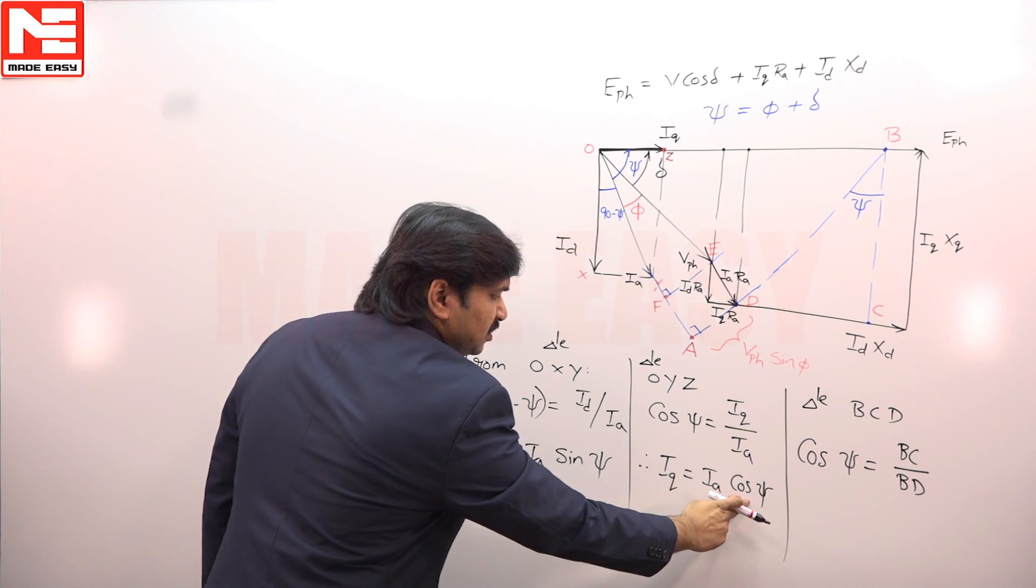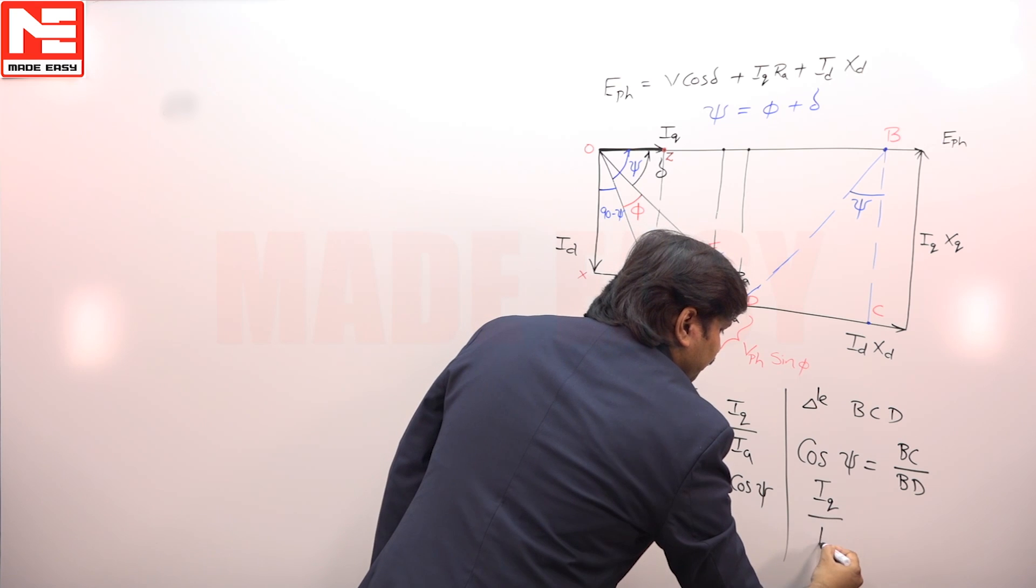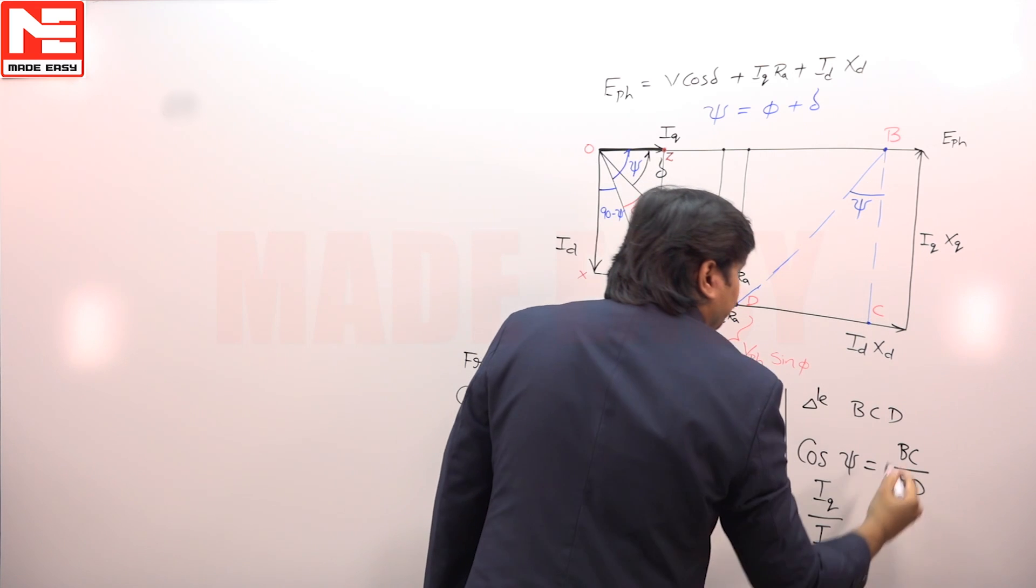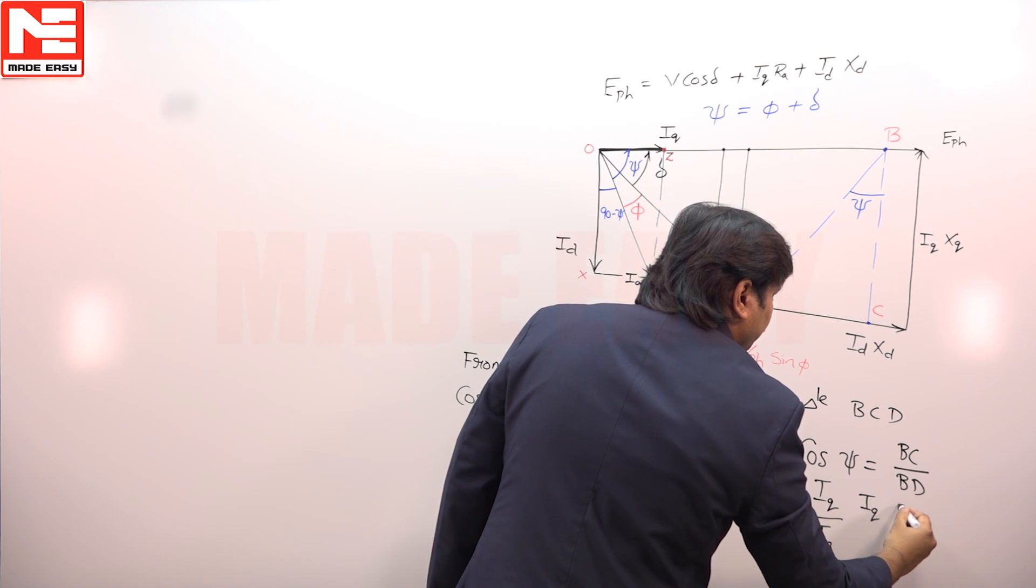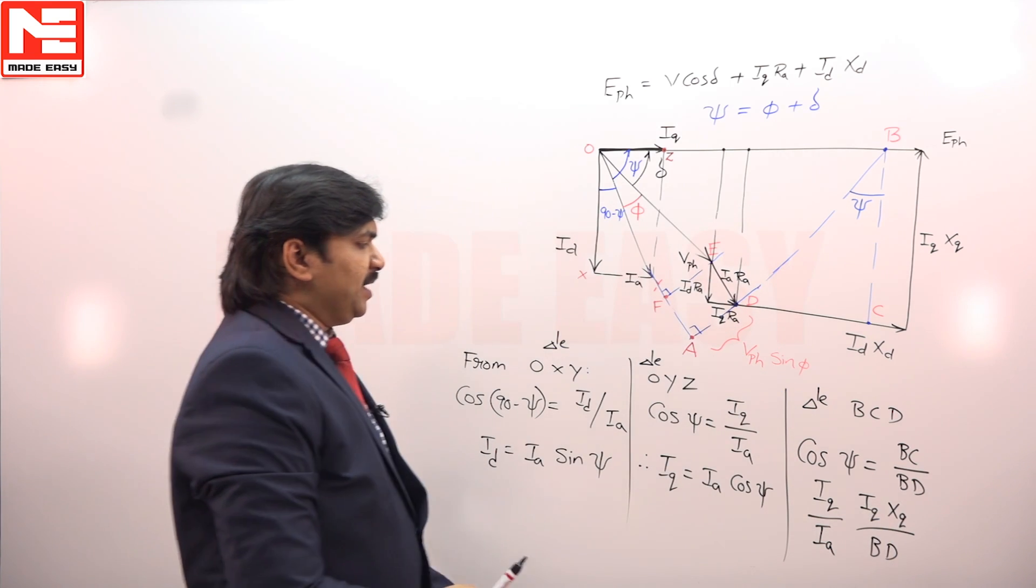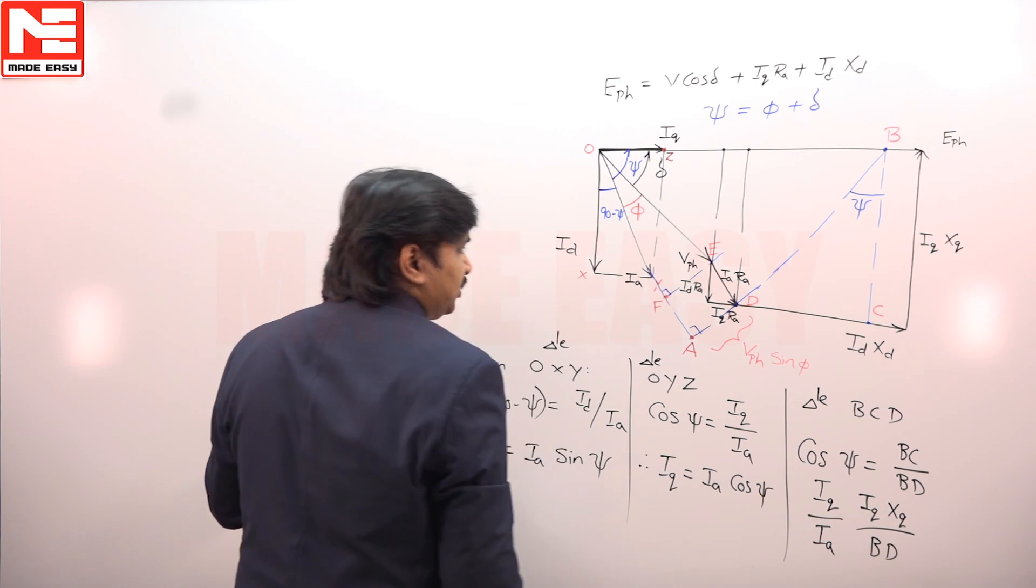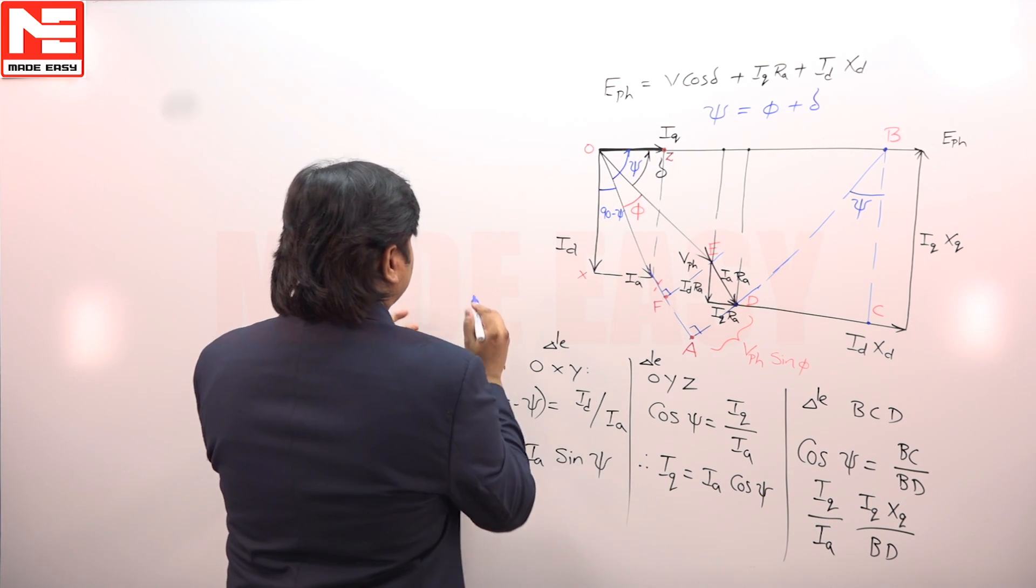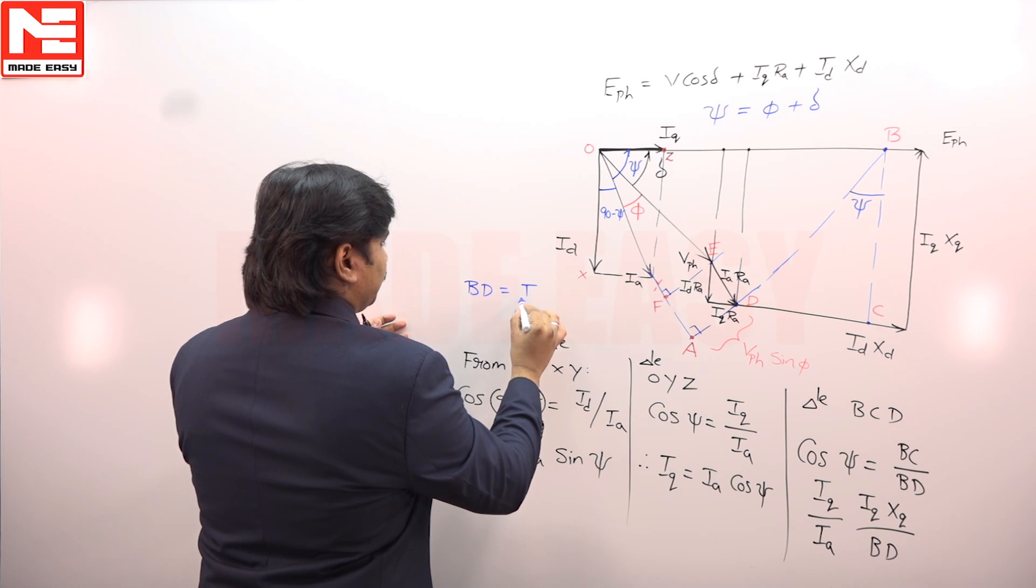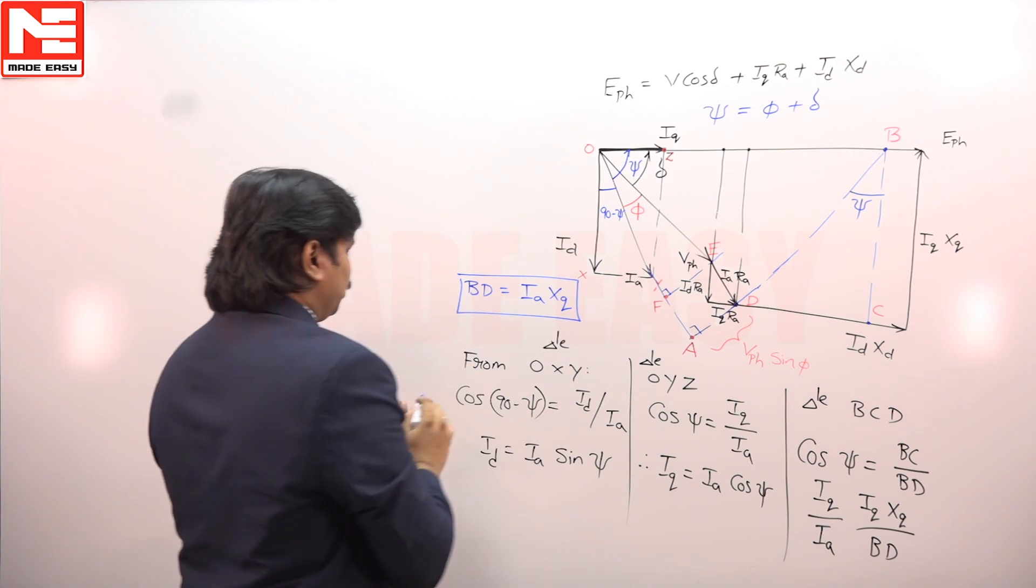What is cos psi from this? IQ by IA. What is BC? IQ XQ by BD. From this, what we can say is BD is equal to IA XQ. From this, the conclusion is BD is equal to IA XQ, useful for the later solving.